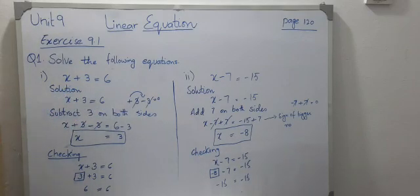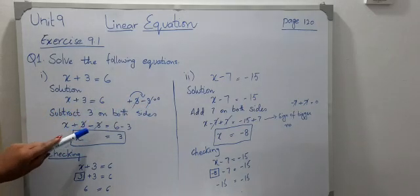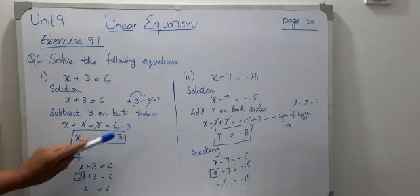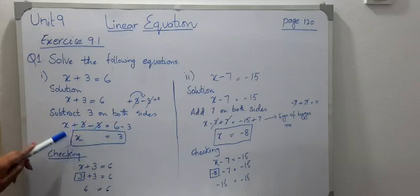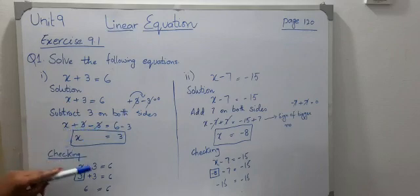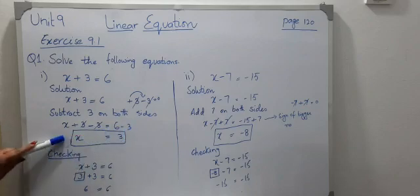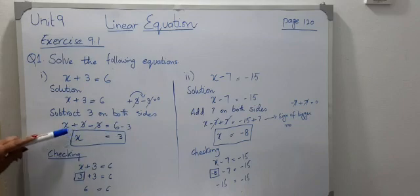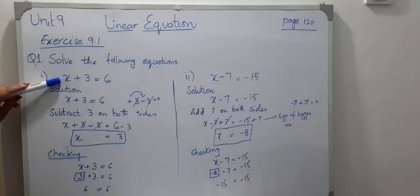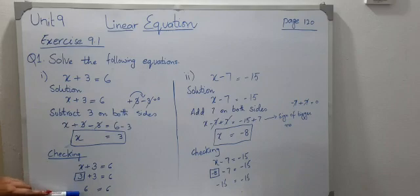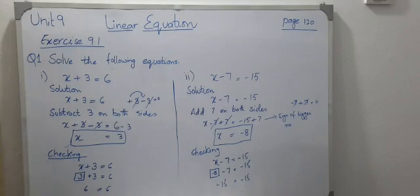Now we are doing subtraction — subtract 3 on both sides. So minus 3 minus 3: plus and minus cancel with each other, and just one variable is left. The answer is x equals 3. Now we put this value in the main equation and both sides are equal, confirming this is a true linear equation.